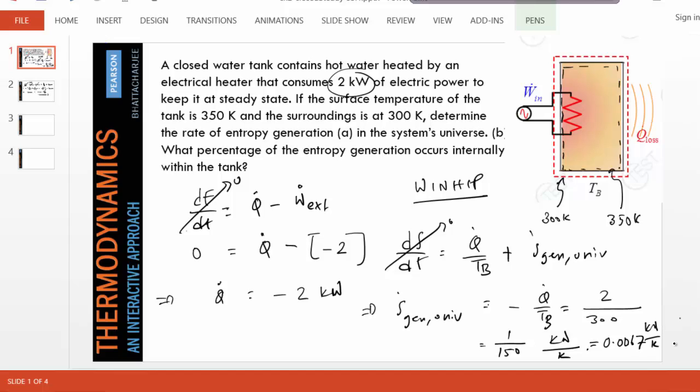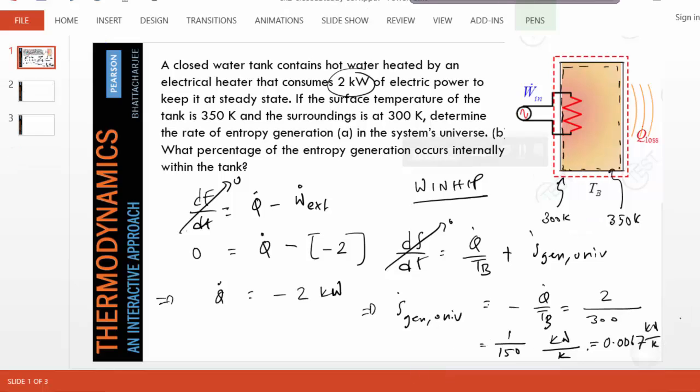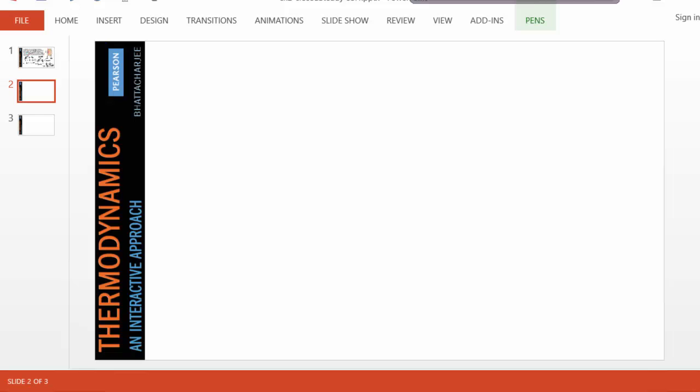Now let's do the same thing for the internal boundary. For the internal boundary, we again write the equation, but this time we are after the internal entropy generation. Notice this is the same - the steady state goes to zero.